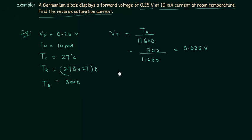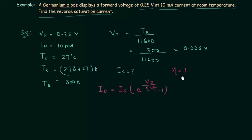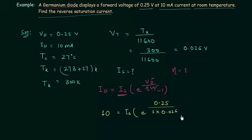Now we have everything to calculate the reverse saturation current Is. The formula is Id = Is × (e^(Vd / (Eta·Vt)) − 1). Since we have a germanium diode, Eta equals 1. Substituting the values: Vd = 0.25, Vt = 0.026, Eta = 1, and Id = 10 mA. So: 10 = Is × (e^(0.25 / (1 × 0.026)) − 1).